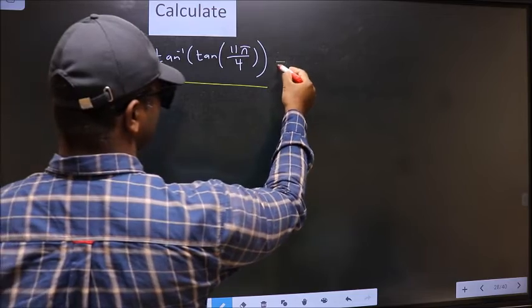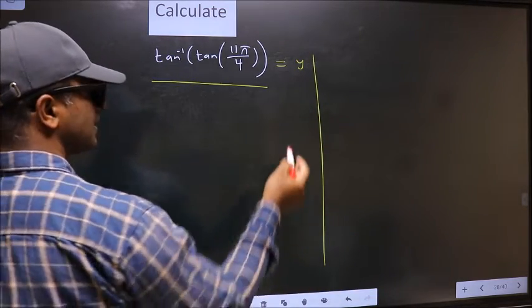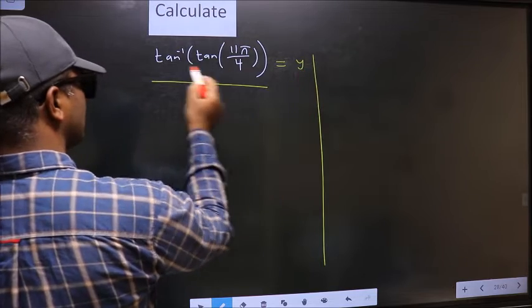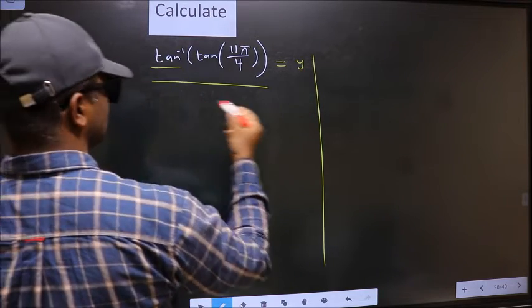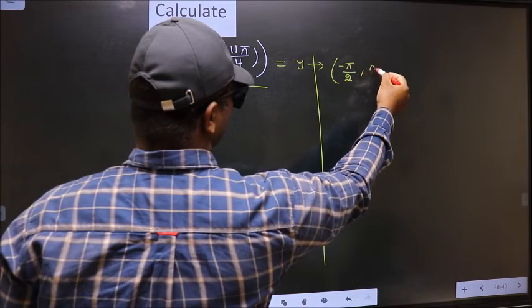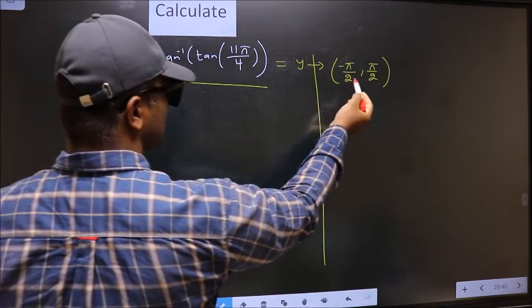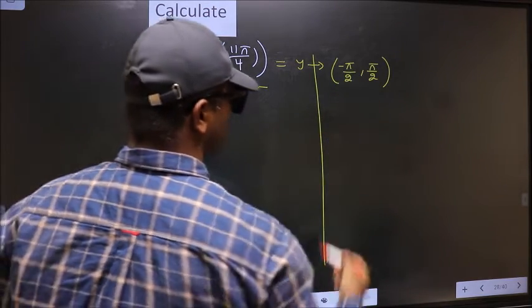So let us take the answer to be Y. And the condition is Y should lie in the range of tan inverse, which is minus π by 2 to plus π by 2. Our answer should lie in this interval.